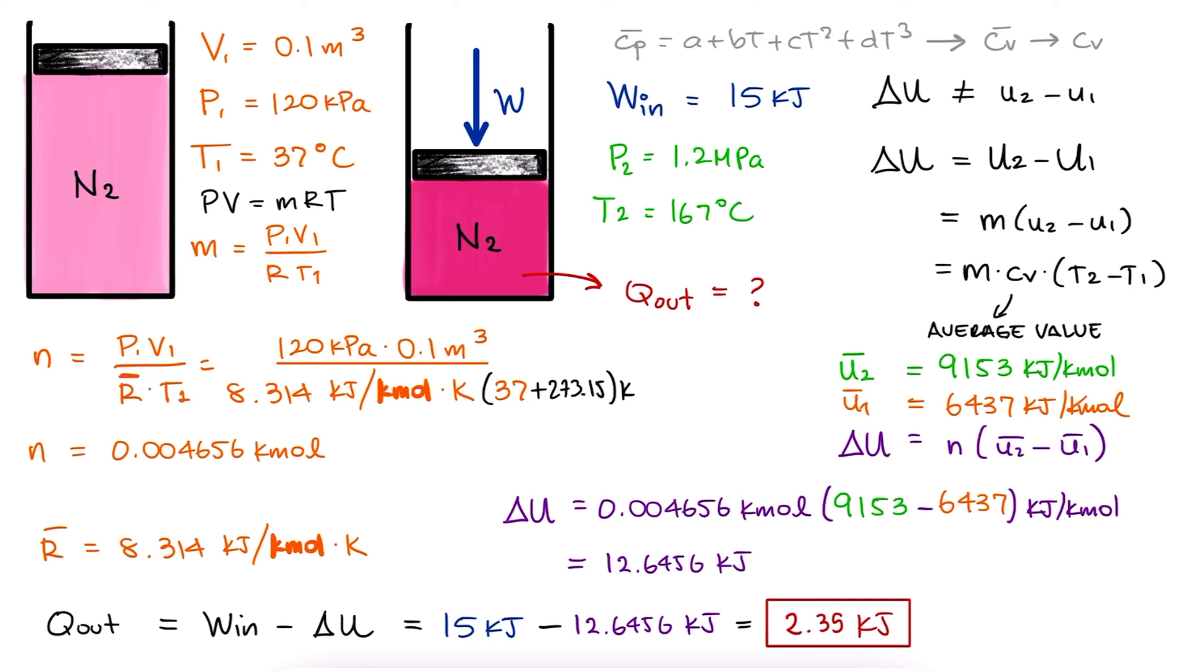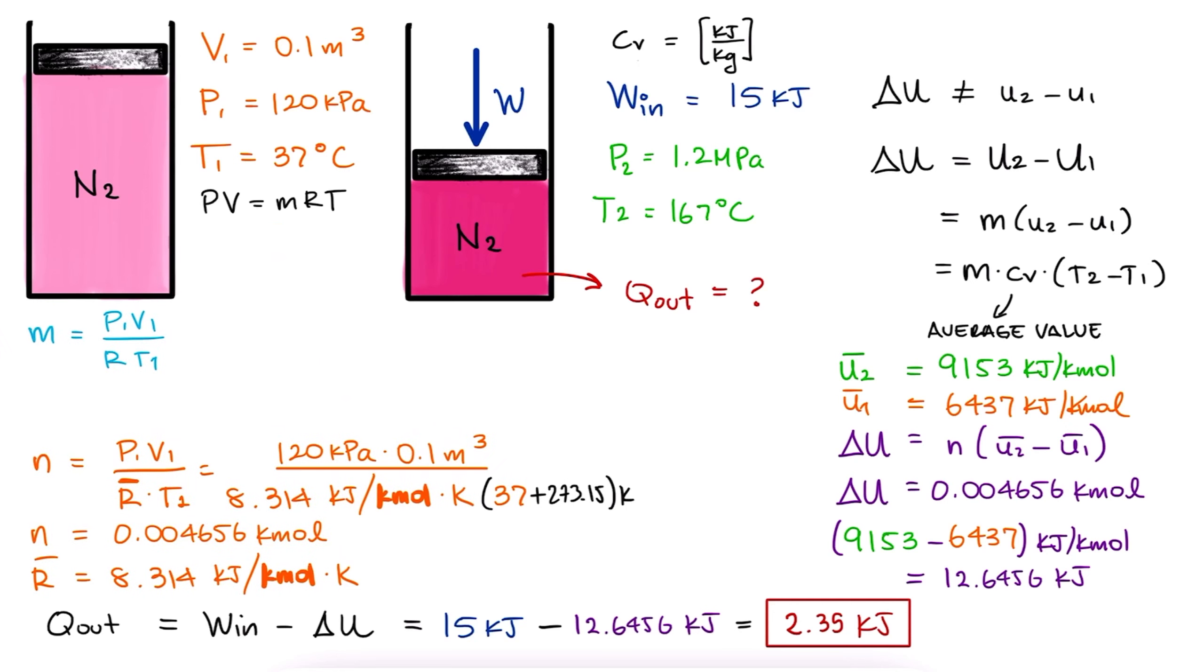For that second case, what we'll obtain is the actual specific heat at constant volume, not the molar specific heat. And because of this, because CV is per kilogram, not per kilomole, we need to find the mass, not the number of moles.